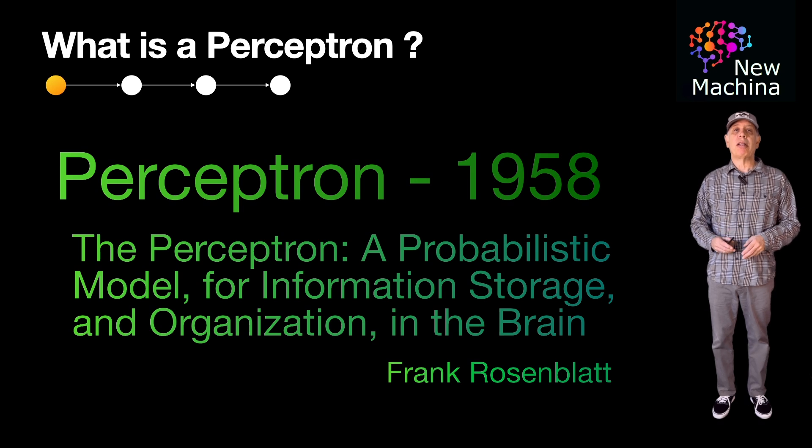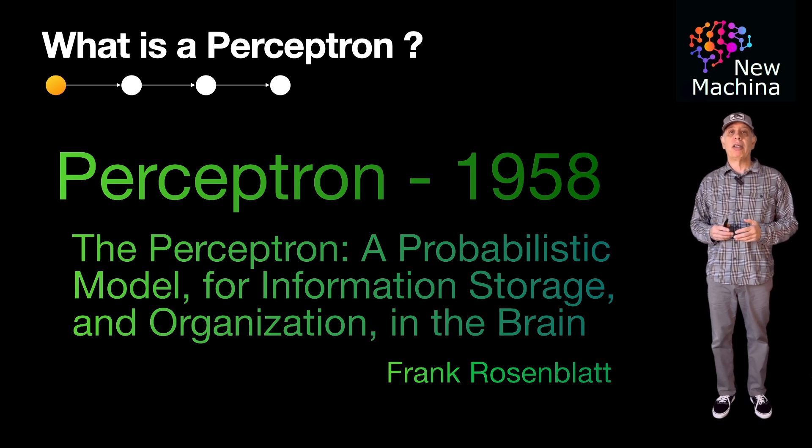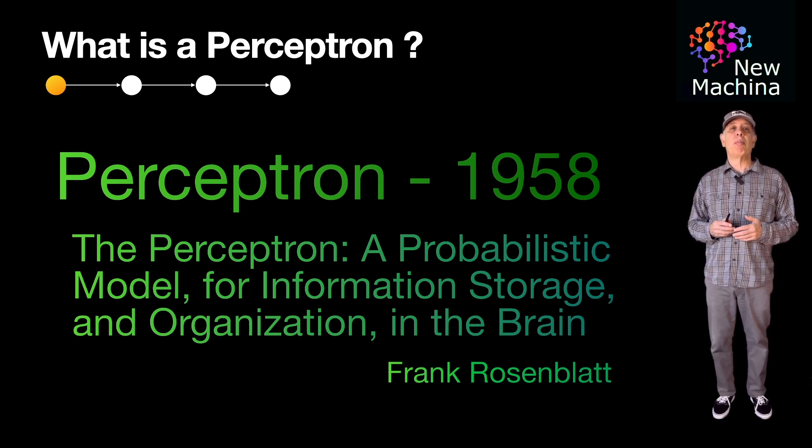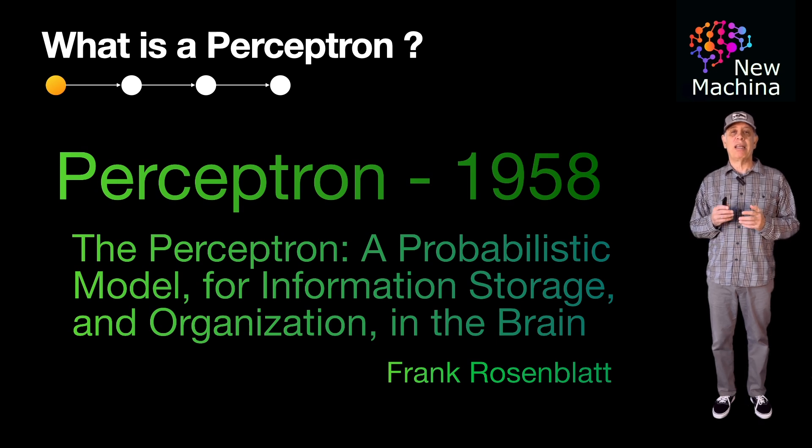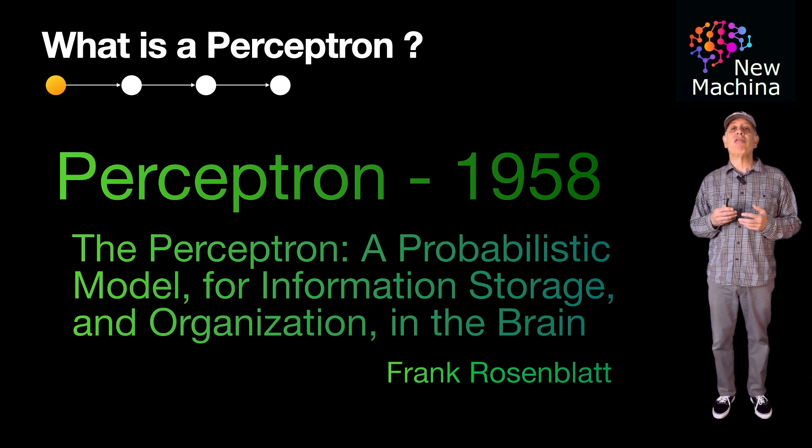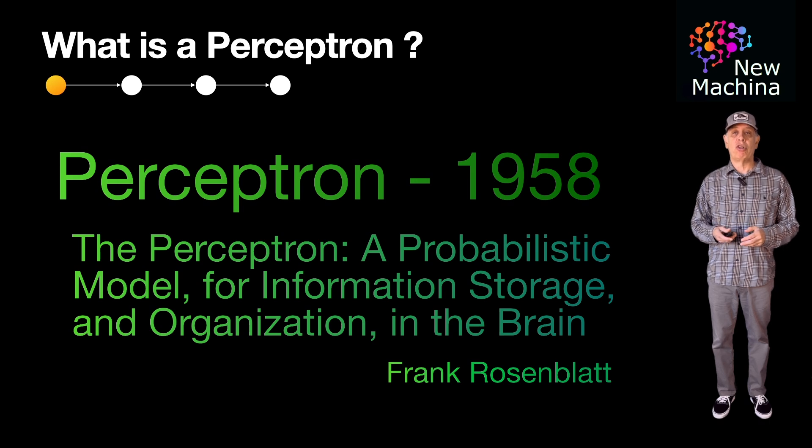The name of Frank Rosenblatt's 1958 paper is the perceptron, a probabilistic model for information storage and organization in the brain. I shared a PDF link to this paper in the YouTube description. In this paper Rosenblatt introduced the concept of the perceptron as a model for artificial neurons and proposed its application to pattern recognition and learning tasks. This work was a significant milestone in the development of neural networks and artificial intelligence.